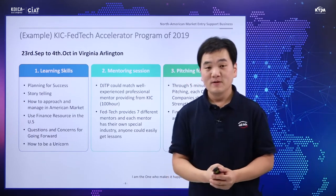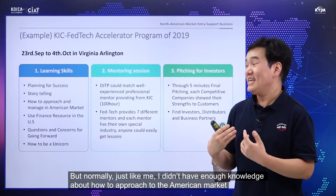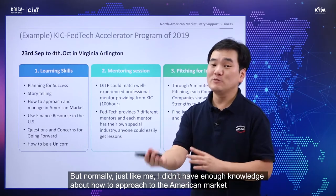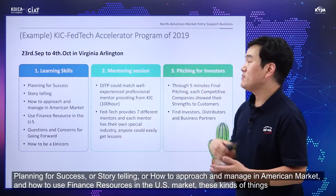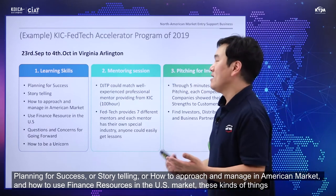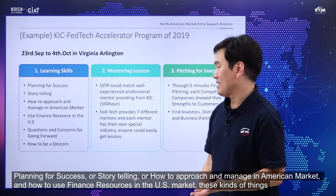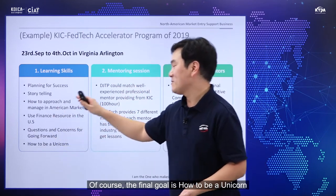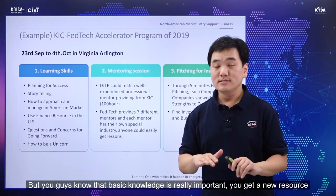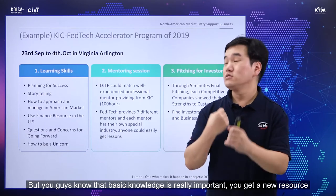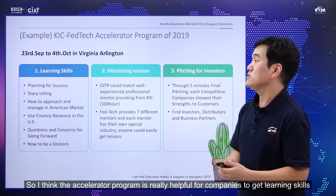The first part is learning skills. Some people have good knowledge about America, but normally — just like me — I don't have enough knowledge about how to approach the American market. Thanks to this accelerator program, companies can learn basic skills: planning for success, storytelling, how to approach and manage in the American market, and how to use financial resources in the U.S. market. The final goal is how to become a unicorn, but basic knowledge is really important. The accelerator program is really helpful for companies to get learning skills.